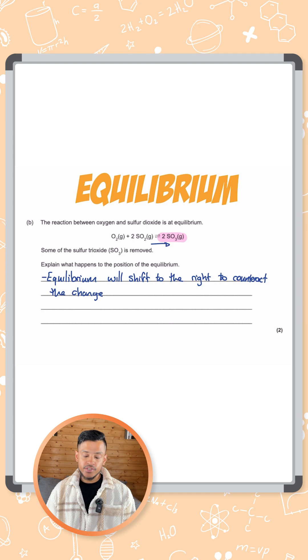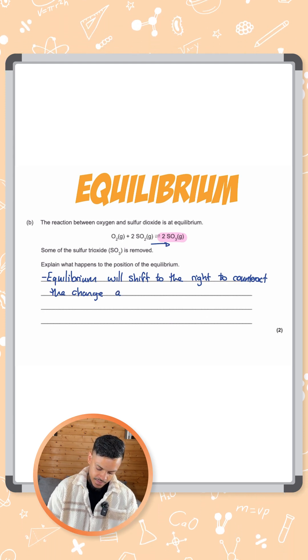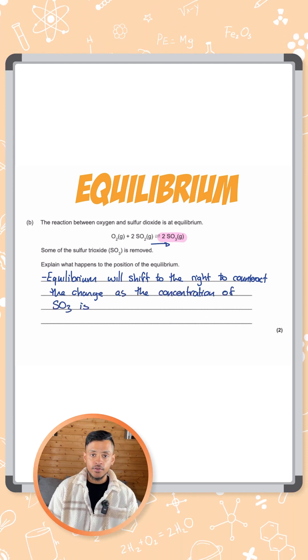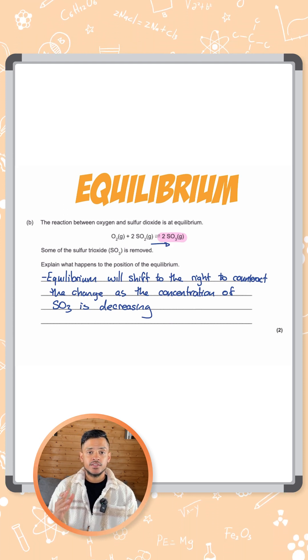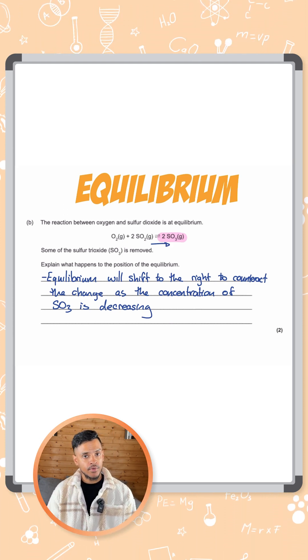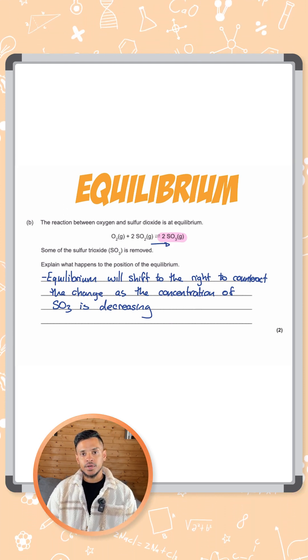The equilibrium will shift to the right to counteract the change as the concentration of the sulfur trioxide is decreasing. That's how to get two marks there.